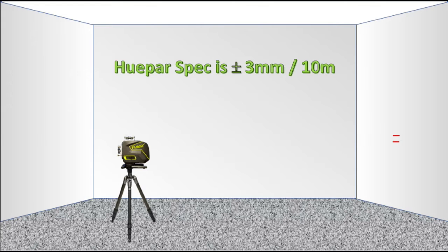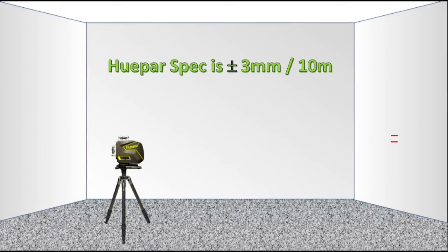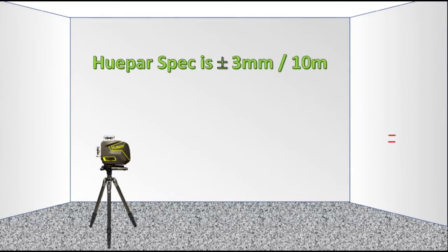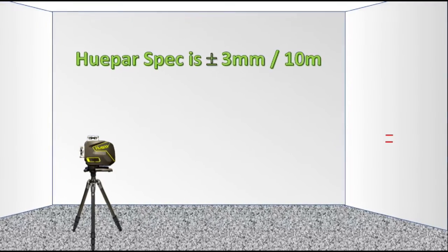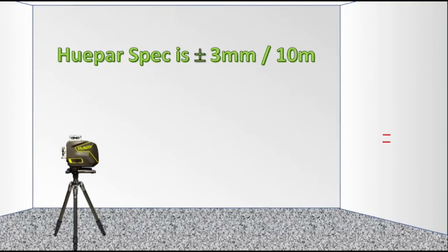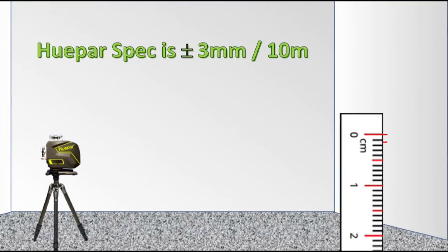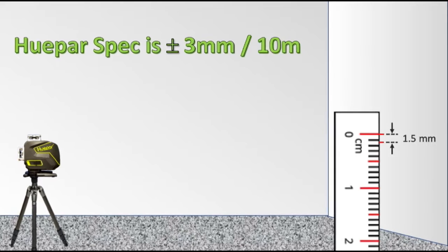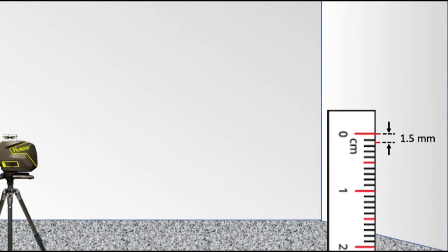The Hupar specification for leveling accuracy is plus or minus 3 millimeters at 10 meters, which actually means a total of no more than 3 millimeters. Since we are taking measurements at 5 meters, the maximum limits are one-half that, or plus or minus 1.5 millimeter.